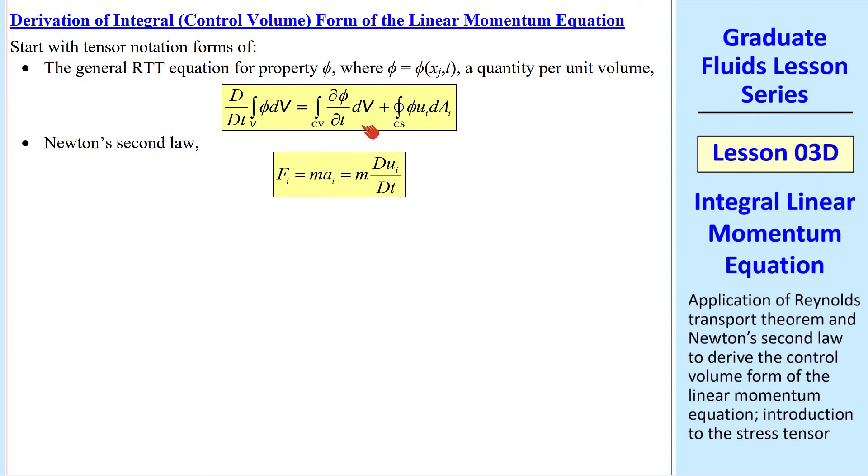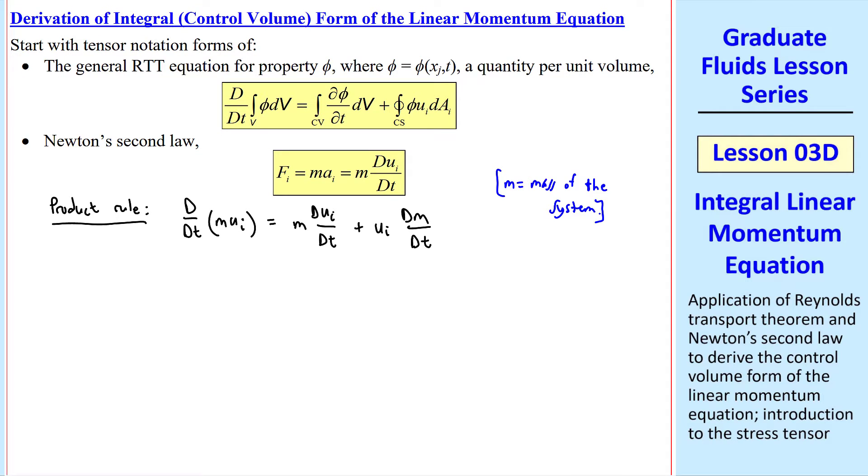To derive this equation, we start with the Reynolds transport theorem and Newton's second law. Think about this product rule: d/dt of mui equals m dui/dt plus ui dm/dt, where m is the mass of the system. But dm/dt is zero if you're following a fluid particle, which is what this special material derivative notation means. So we rewrite Newton's law as dm ui/dt equals fi. This is an alternate form of Newton's second law, valid at any instant in time.